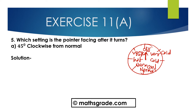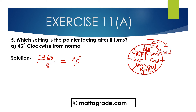45 degrees clockwise from normal. Normal is this side. So 45 degrees each. Here there are 1, 2, 3, 4, 5, 6, 7, 8 — 8 pointers are here. 360 divided by 8 is 45 degrees. Each pointer, that is from 'off' to 'very cold', this is 45 degrees. And 'very cold' to 'cold', this is also 45 degrees. Likewise, each pointer represents 45 degrees.